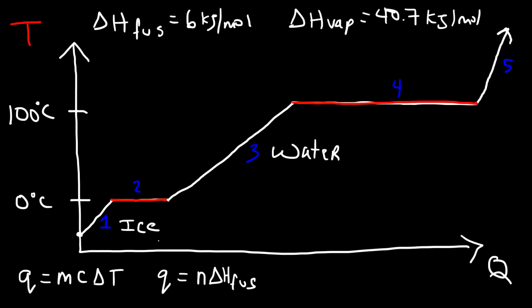In segments one, three, and five the kinetic energy is increasing because the temperature is going up. But for segments two and four the potential energy is increasing — that is the energy stored in the bonds. When you heat up ice you cause the hydrogen bonds to break, increasing potential energy. And when you heat up liquid water and turn it into steam, the water molecules move further apart, also increasing the potential energy of the system.